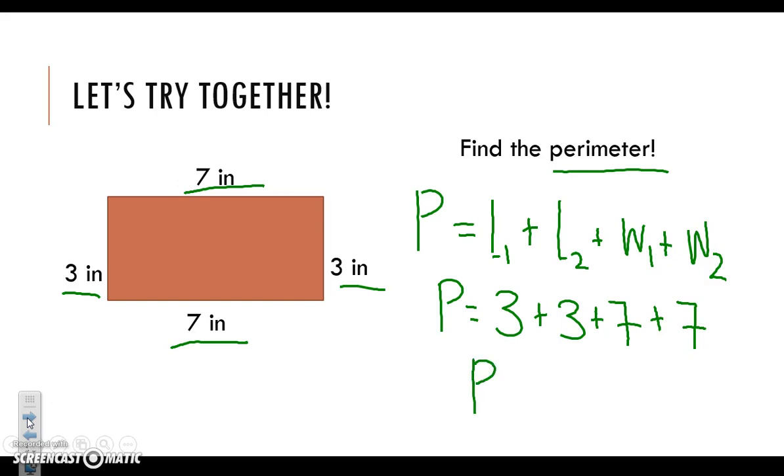When we add up each of our lengths and widths, we know that 3 plus 3 is 6. 7 plus 7 is 14. We can come up here and add 14 plus 6. We know 6 plus 4 is 10. We carry our 1, drop our 0. 1 plus 1 is 2. We have a perimeter of 20, but we can't forget to add the units. 20 inches.